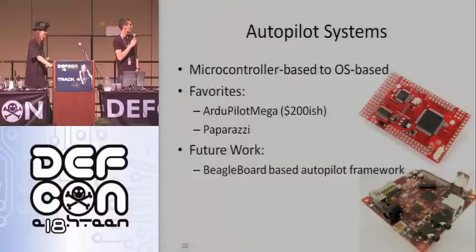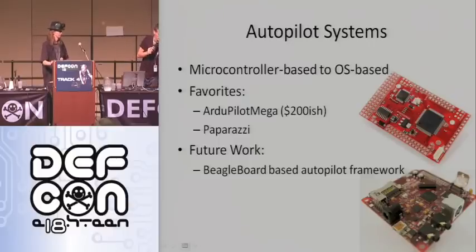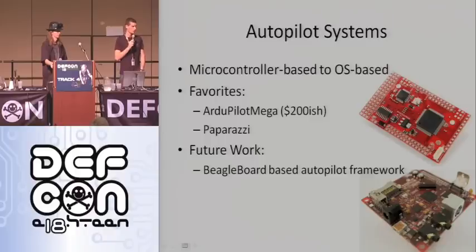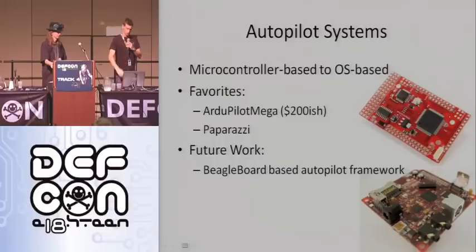Future work: the BeagleBoard in the bottom right is a $150 Pentium 3 equivalent computer that fits in your hand — this is one right here. It's just a single board computer. Runs any Linux distribution that you flash to an SD card, runs at 750-something megahertz, so it's got plenty of processing power and USB connectivity. Future work is taking the BeagleBoard and maybe developing our own autopilot framework right on it, just because we can.